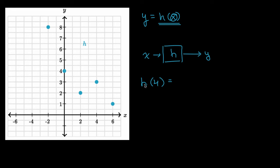Well, all h of four means is, when I input four into my function h, what y am I spitting out? Or another way to think about it, when x is equal to four, what is y equal to? Well, when x is equal to four, my function spits out that y is equal to three. We know that from this point right over here. So, y is equal to three, so h of four is equal to three.